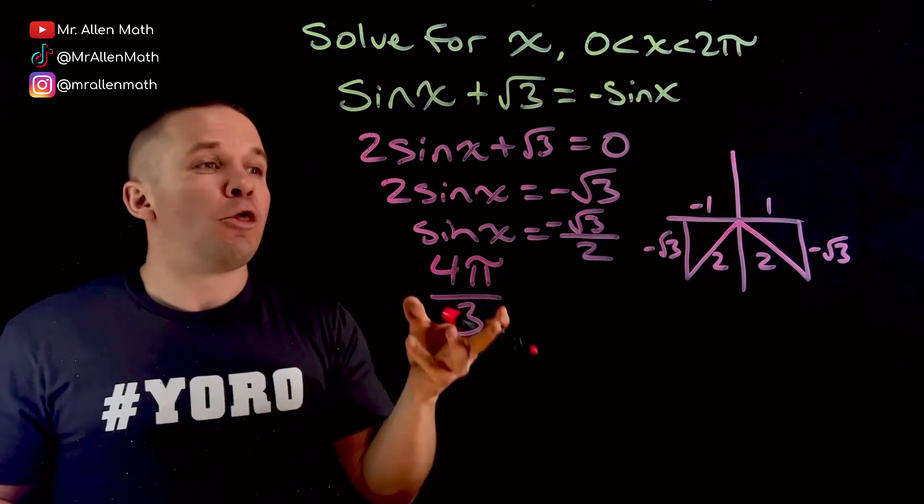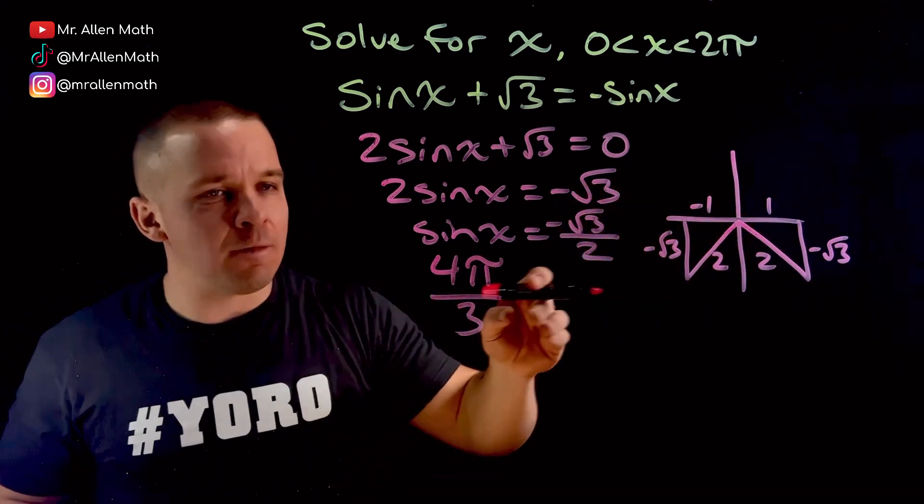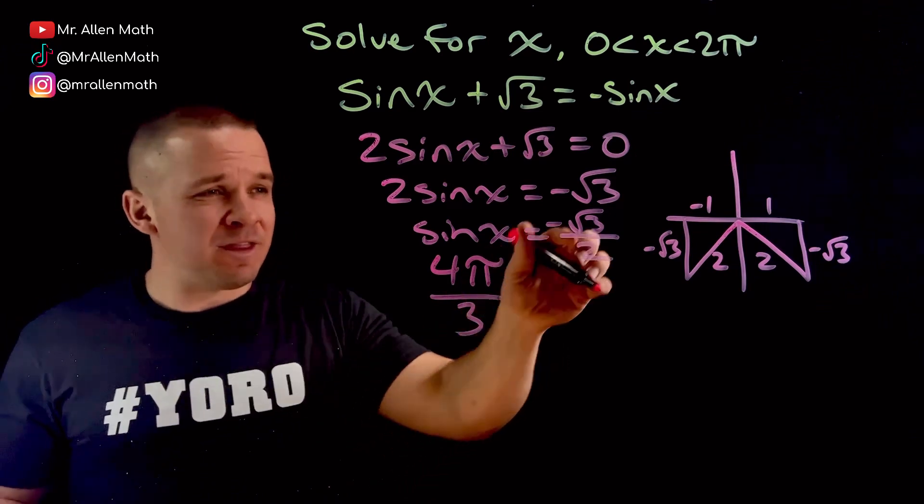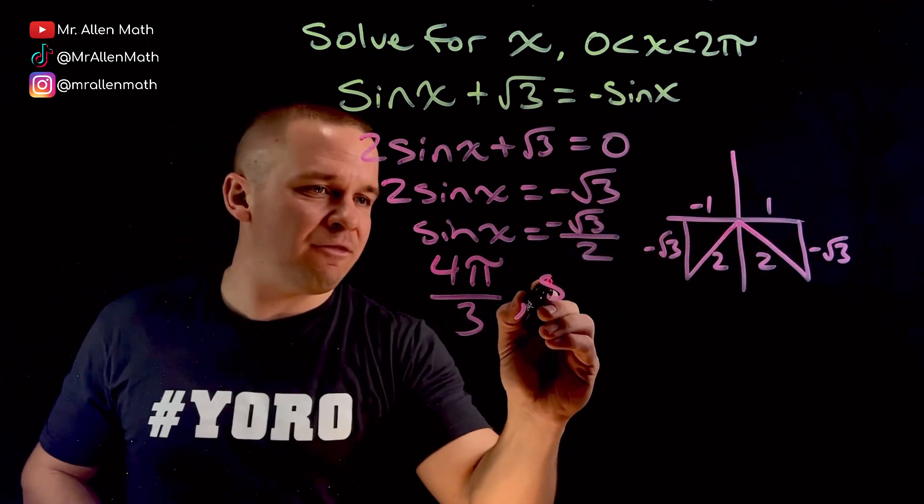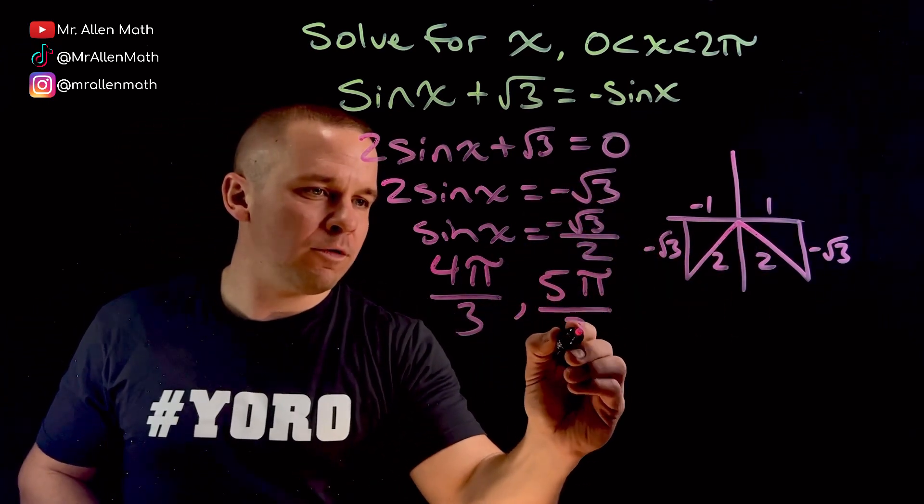That's one past it, right? 3 pi over 3 is your pi. And then pi over 3 to get down there. And then the last one here, that's going to be our 5 pi over 3.